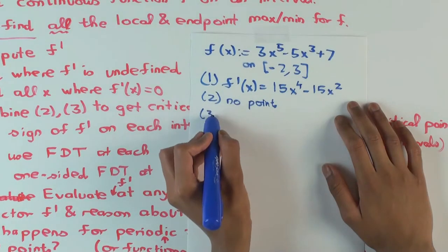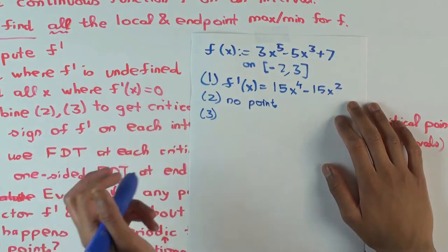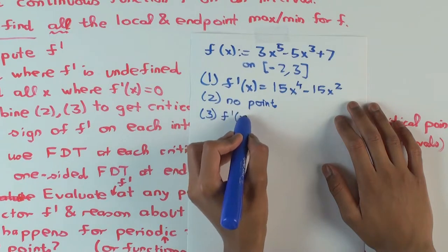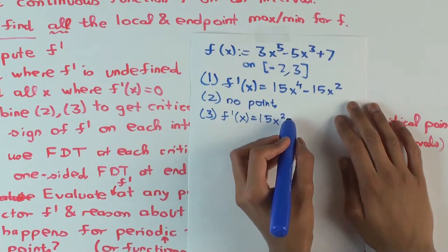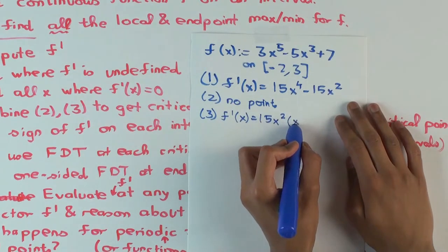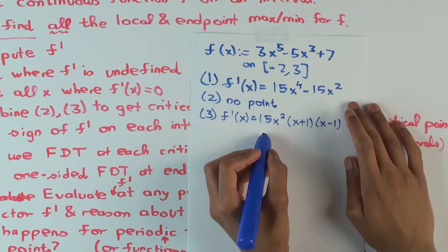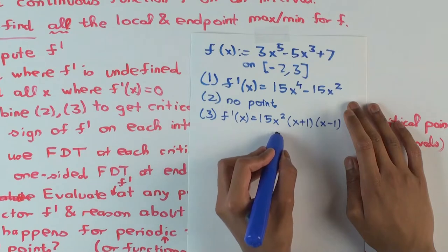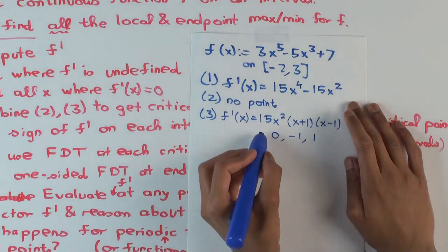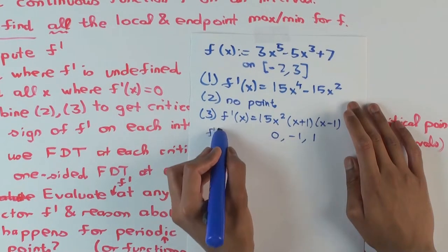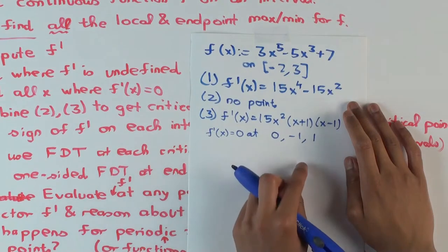Step 3, you have to solve where it's 0. And in the process, let's factor it, because that will also be useful for step 5. So F prime x is what? Pull the 15 out. So 15x squared times x plus 1 times x minus 1. What are the roots of this? 0, negative 1, 1. So F prime x is 0 at these three points.